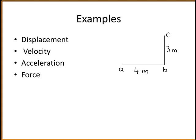Some examples of vector quantities are given here. The first one is displacement. Displacement is the shortest distance from your starting point to the finishing point.